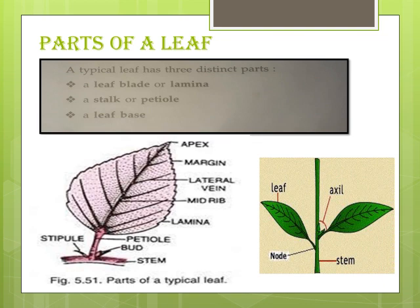Now, the petiole is the stalk by which the leaf lamina is attached to the main stem. The leaf lamina — the whole broad part of the leaf — is attached to the main stem by this small stalk, the petiole (P-E-T-I-O-L-E). The leaf base is the part of the leaf in contact with the stem at the node — it is part of the leaf itself, not the stem. The lamina is broad and flat, making it well adapted to absorb sunlight and carbon dioxide for photosynthesis.